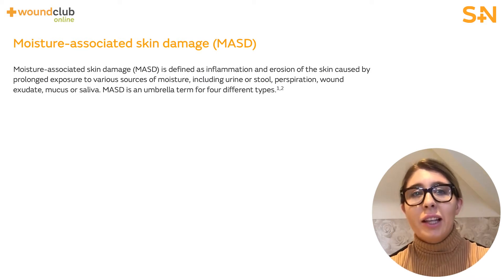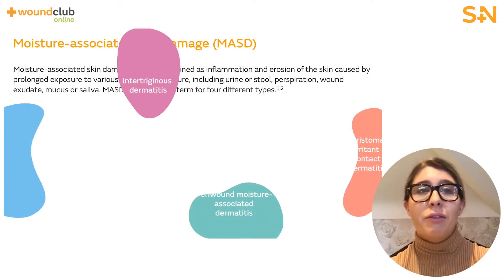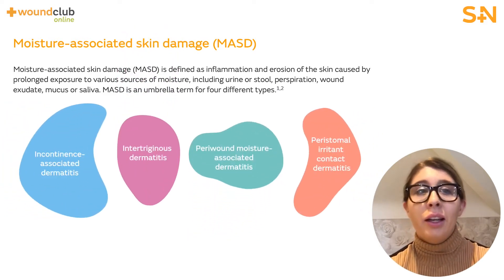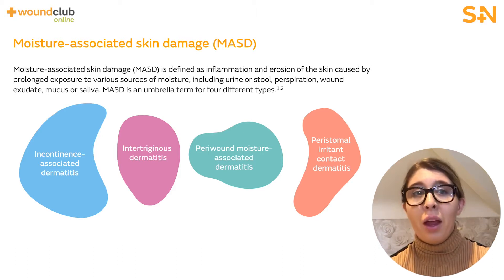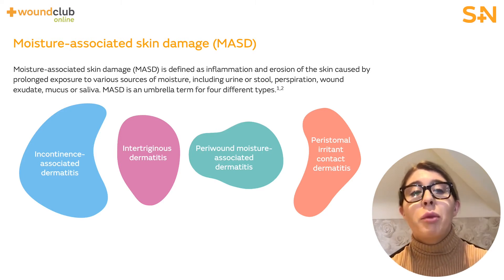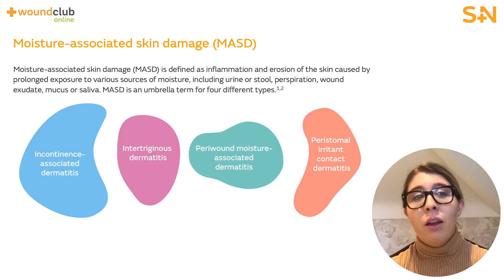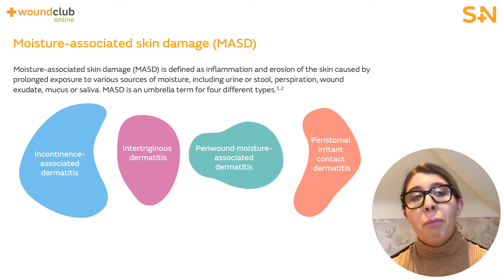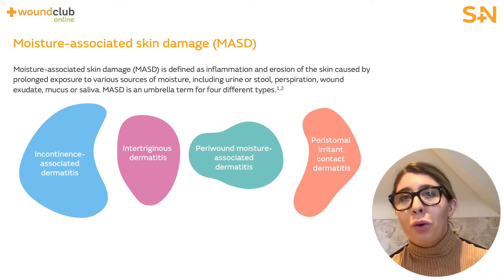It is generally accepted that MASD consists of four distinct conditions, each having a slightly different etiology, namely incontinence associated dermatitis, intertrigo, peri-wound moisture associated dermatitis, and peristomal irritant contact dermatitis. It's important that you distinguish between the four conditions to ensure appropriate prevention and management. For more information around the four types of MASD, be sure to check out the MASD Wound Club online module.